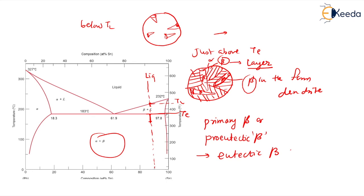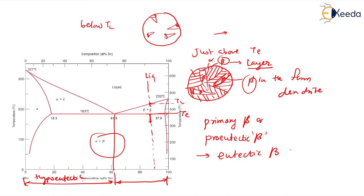This is how we get the microstructure for the hyper-eutectic system. This is the eutectic point; below this is hypo-eutectic — we have seen the hypo-eutectic transformation. Just now we have seen the hyper-eutectic, which is similar to the hypo-eutectic. Hyper means more than the eutectic, and hypo means less than the eutectic. This is how we get the evolution of microstructure in case of hyper-eutectic transformation. Thank you so much.